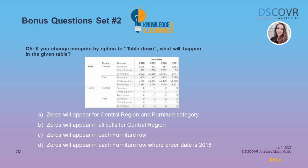Here we have another tricky question related to table calculations. We're given a table and need to describe what will happen if we change our compute-by option to table down as opposed to table across. The answer here is A, and if you struggled answering this question, I would highly recommend recreating it on your end and playing around by changing the scope, because you will definitely see a good number of these questions on the exam.